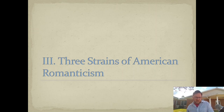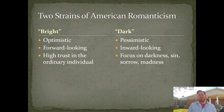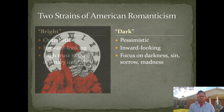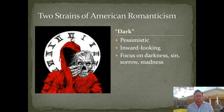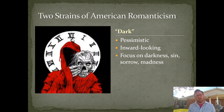Let's finish by talking about three strains of American Romanticism — these are my terms. First, there is the bright strain of American Romanticism, which is what I've been talking about so far. This is the predominant strain: optimistic, forward-looking, with high trust in the ordinary individual. But there is also a second strain among white American authors — a dark strain of Romanticism that tends to be pessimistic and inward-looking, focusing on darkness, sin, sorrow, and madness. These are the stories of Edgar Allan Poe — we'll read several of those. And these are the stories of Nathaniel Hawthorne, whose focus is not so much high trust in the individual but rather the reminder that sin and darkness are in every human soul.